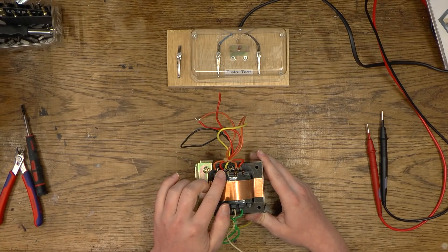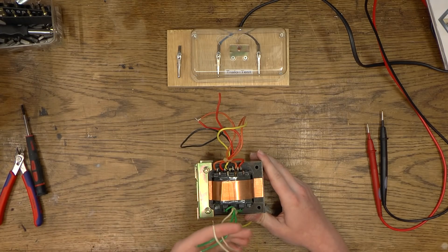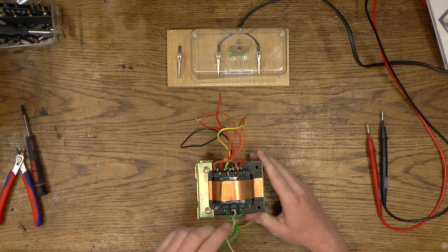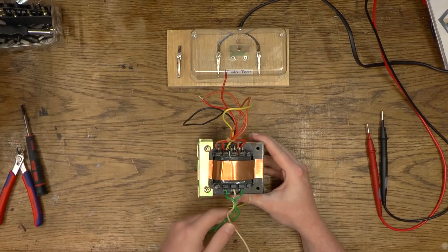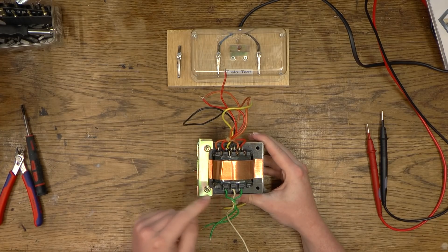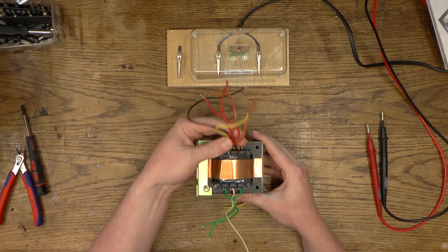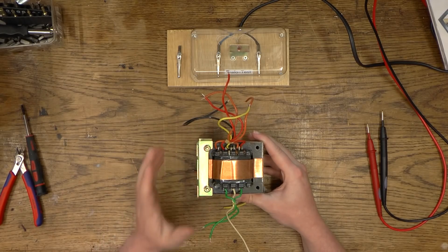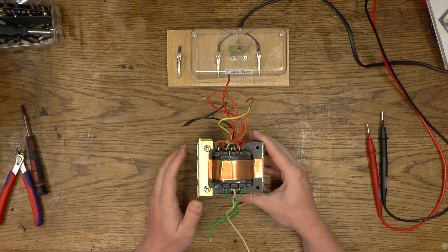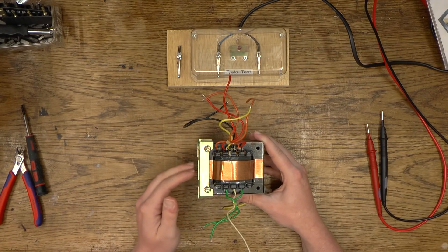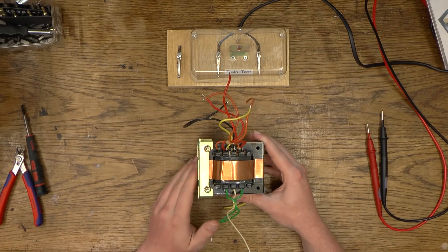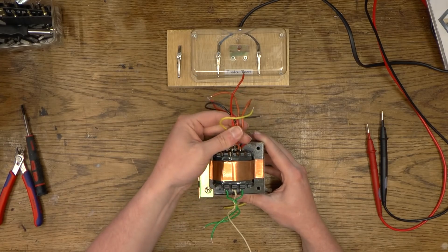The colors are all pretty random. These do look like they had something to do with each other. Green and white might be a center tapped output. But then right here I don't know what this is all about. So this is where we are going to start. We have to figure out what is what. We'll have to figure out which windings connect to which wires.